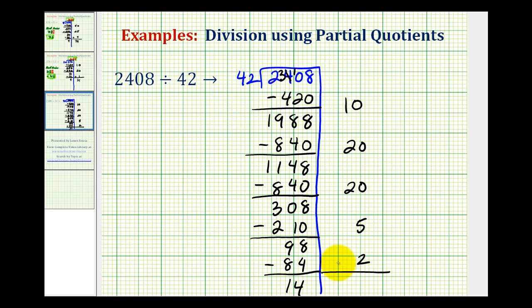So now we need to sum our partial quotients. 10 plus 20 plus 20 is 50. Plus 5 plus 2, that would be 57. So our quotient is 57 with the remainder of 14. Or if we want, as a mixed number, we would have 57 and 14 over 42. Which again does simplify. These both do share a common factor of 14. Let's divide the top by 14, divide the bottom by 14. So our simplified quotient would be 57. And this would be 1 third.